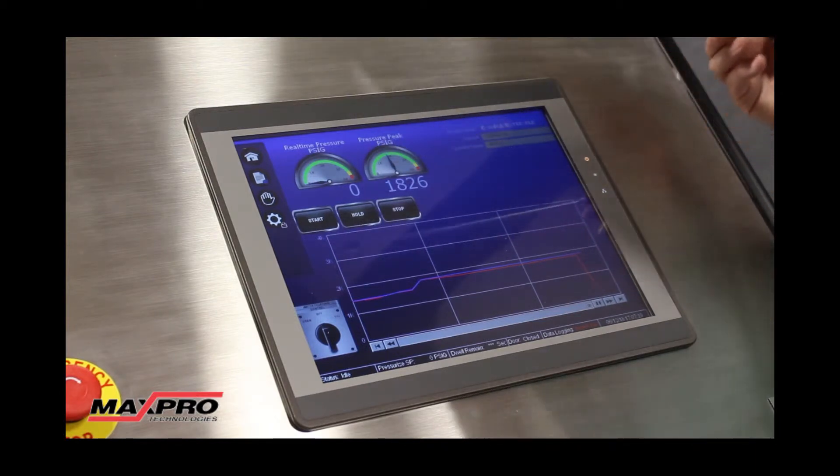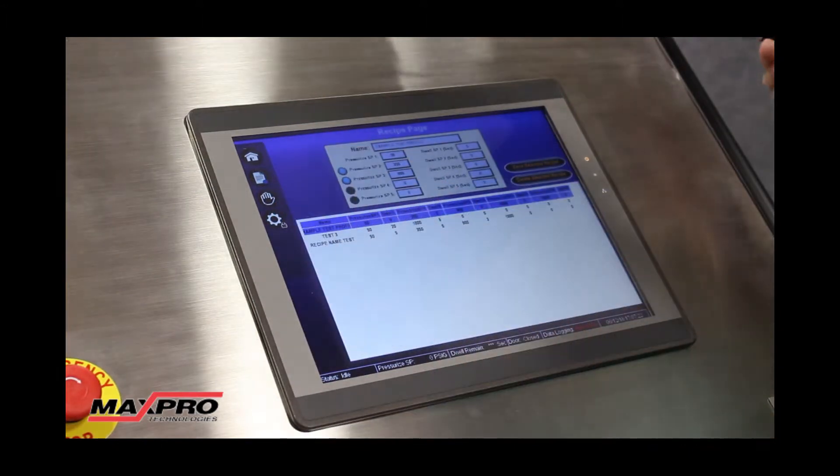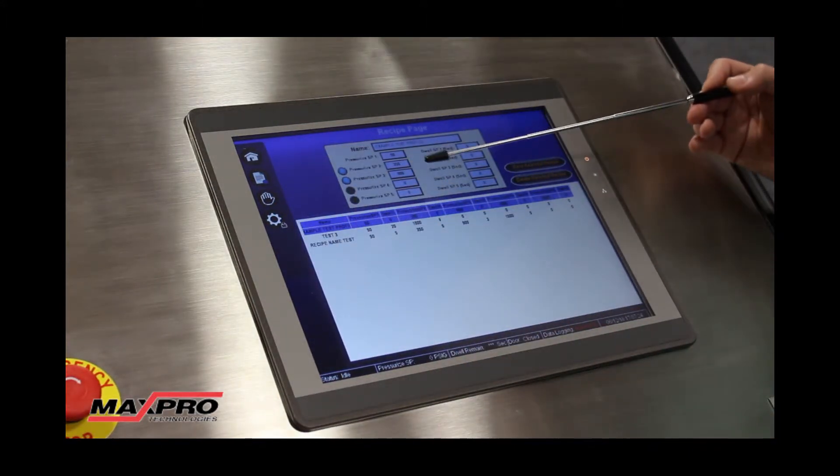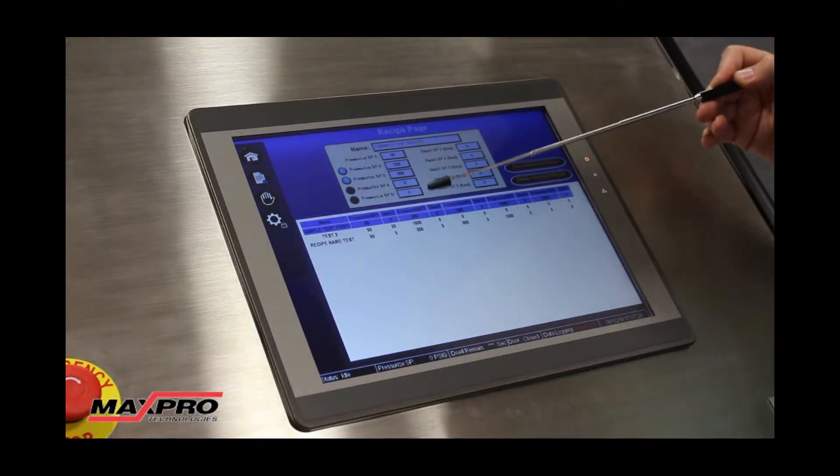What you'll need to do is click on the recipe page. It'll look like this. What you have is the ability to load up to five pressure points and a dwell for each one.